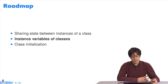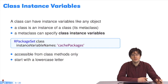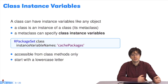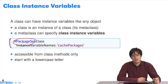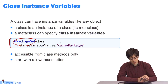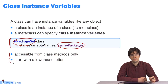Now let's look at instance variables of classes — it's not the same thing. A class is an object like everything else. Like all objects, a class can have instances. The metaclass describes the class and lists the instance variables that can only be accessed by the sole instance, its class. To define an instance variable on the class side, we click on the class button in the code browser. That gives us the expression here. So now I'm browsing the rPackageSet class. The metaclass of this class defines a variable named cachePackages.